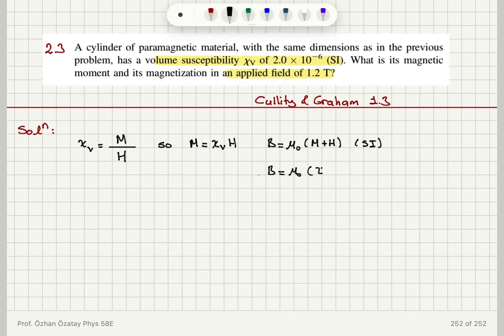Therefore we find that B is equal to μ₀ times (volume susceptibility plus one) times H. So if you want to calculate the magnetizing field H, this is equal to B divided by μ₀(1 + volume susceptibility).